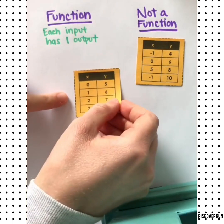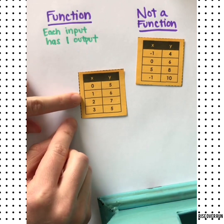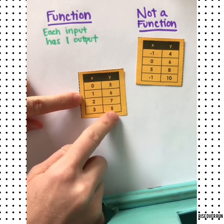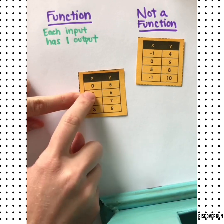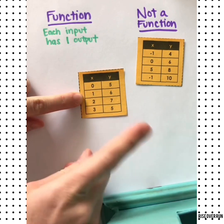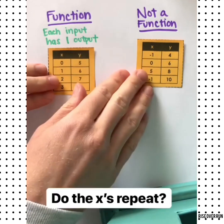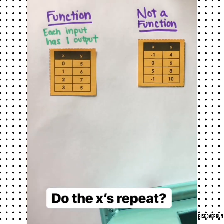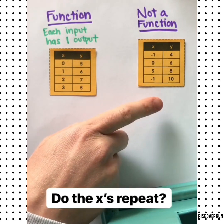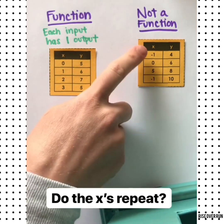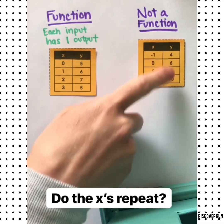How about this one? The outputs are repeated, but that's okay, because each input still only has one output. So many students just say, I just need to make sure the x's don't repeat. That is mostly true. If your x's do repeat, then they need to have the same output.